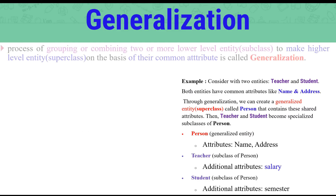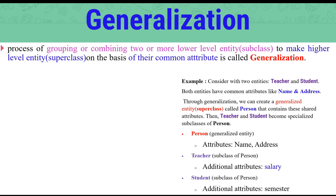What is Generalization? Generalization is a process of grouping or combining two or more low-level entities or subclasses to make a higher-level entity or superclass, on the basis of their common attributes. When multiple sub-entities share common attributes, those are merged and the resulting higher entity is called a superclass — this process is called generalization.